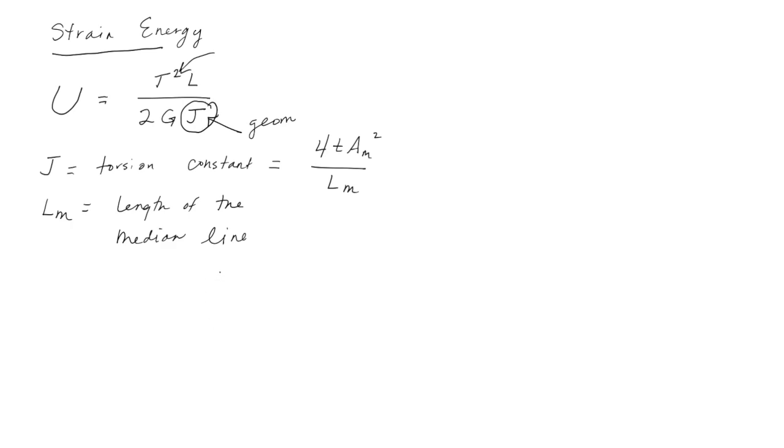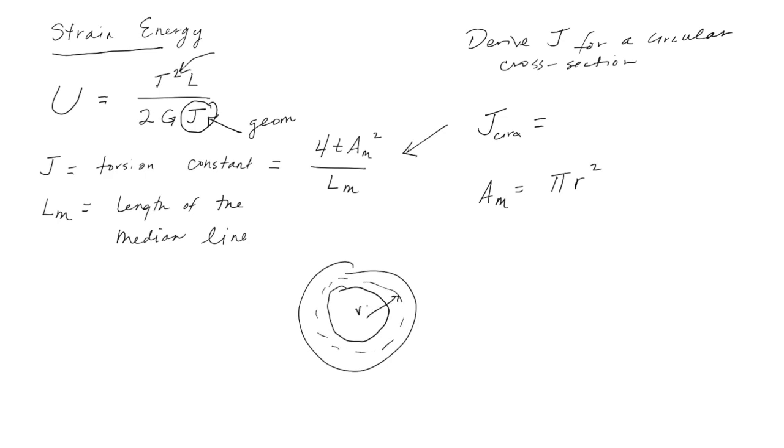Just to give you some familiarity with J, we can derive J for a circular cross-section. If we have a circular cross-section, then A_m for a circle is just pi r squared, where we have this median line and that's r. And the length of the median line of course is just 2 pi r, so we can plug these in.